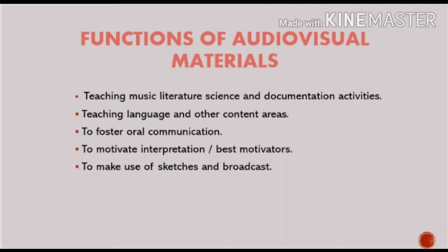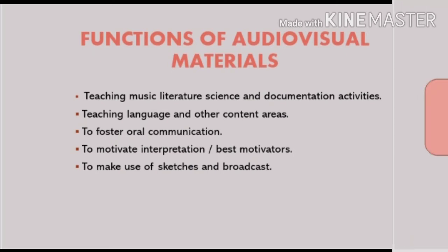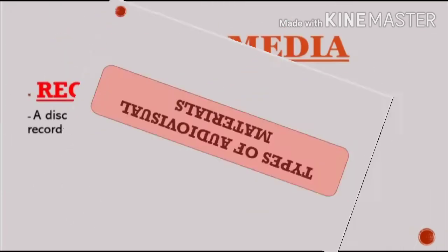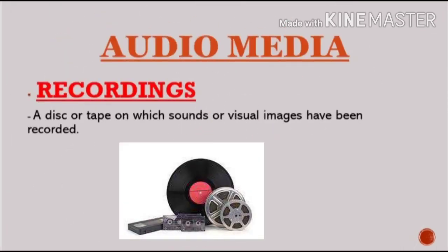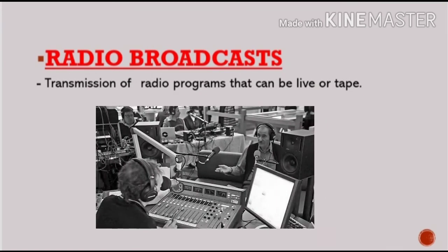Audiovisual materials can encourage both the students and teachers to interact with each other effectively. The first type of audiovisual materials is audio media. Under audio media is recordings — a disk or a tape on which sounds or visual images have been recorded, where files can be reproduced and stored. Next is radio broadcast, the transmission of radio programs that can be live or taped, and the distribution of audio or video content through mass communication medium.